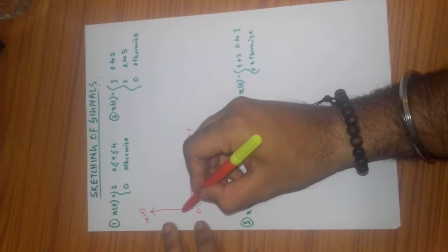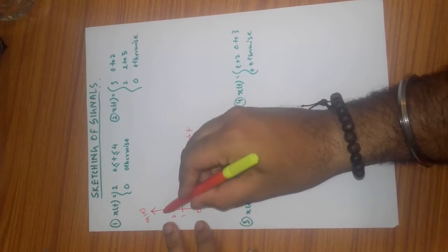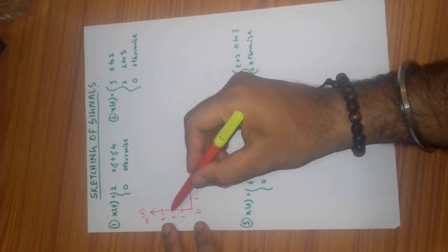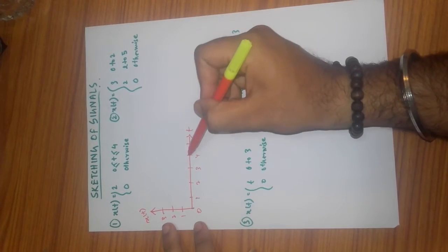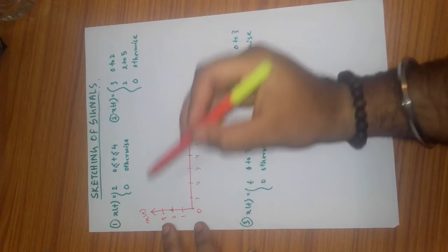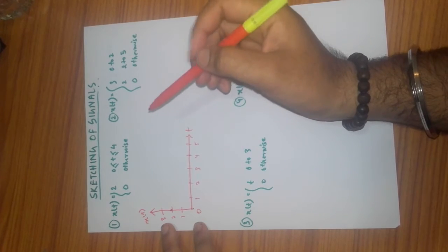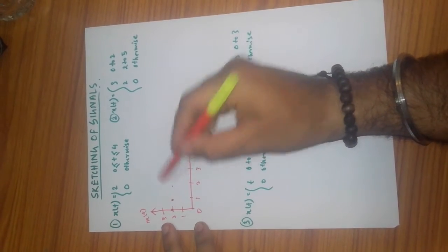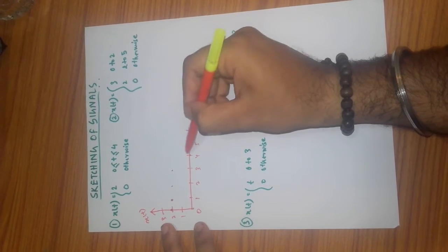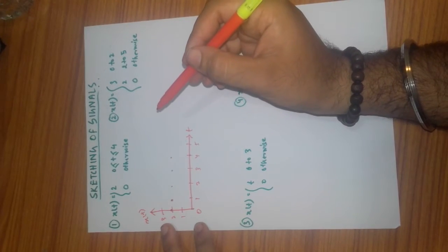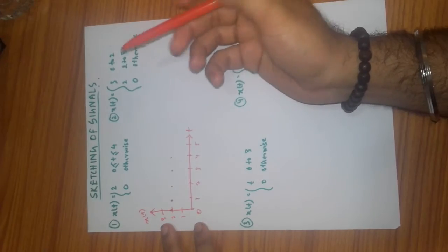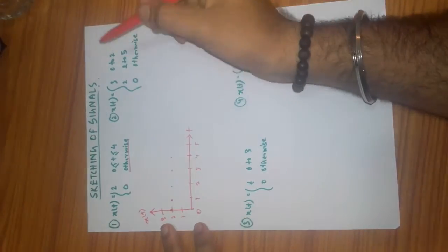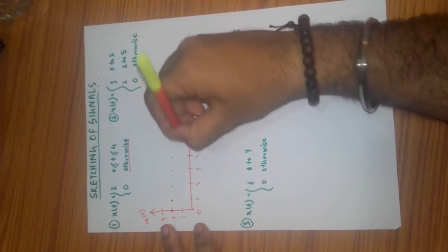The amplitude is 2 — so at t=1 amplitude is 2, at t=2 amplitude is 2, at t=3 amplitude is 2, at t=4 amplitude is 2. But at t=5, the signal says it is 0 otherwise, so at t=5 the amplitude is 0.